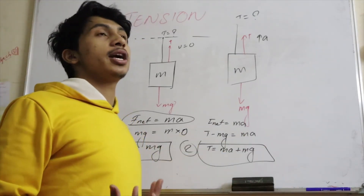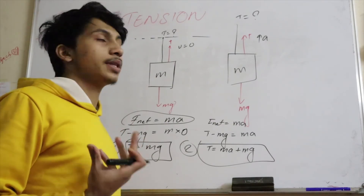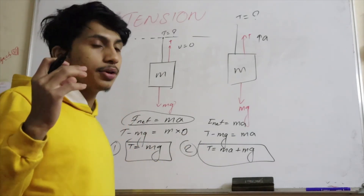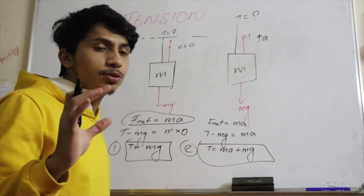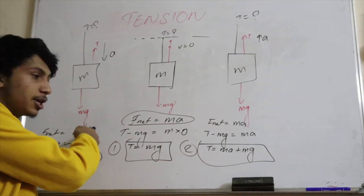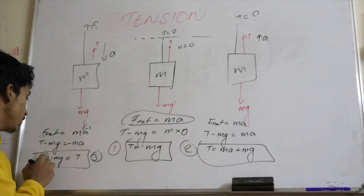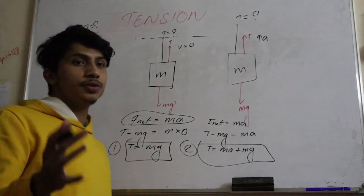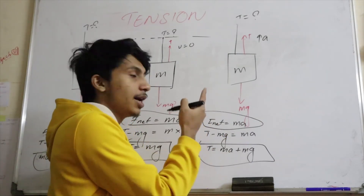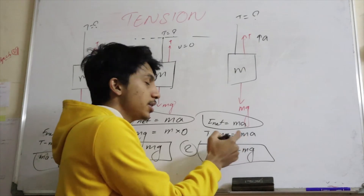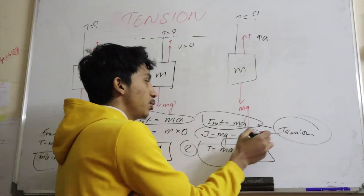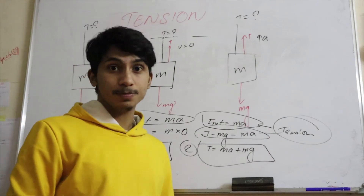In the second case, when acceleration is acting upward — like a parachute, where air resistance pushes you up — the tension is T equals m(a + g). When acceleration is acting downward, the tension is T equals m(g − a). The simplest method to calculate tension is always to start from F_net equals ma, which gives T minus mg equals ma.